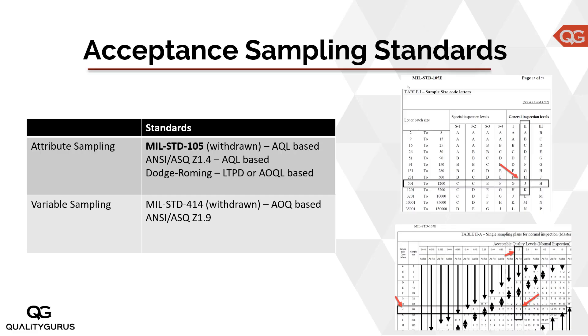When we talk of acceptance sampling, there are two types: attribute and variable. Attributes are counts, variables are actual measurements. For example, if I was buying millions of iron balls with a fixed target weight, in attribute sampling I would take some samples, check those balls, and count how many meet the criteria and how many do not — how many are acceptable, how many are rejectable. That counting of acceptance versus rejection is attribute sampling: go/no-go, yes/no, pass/fail.